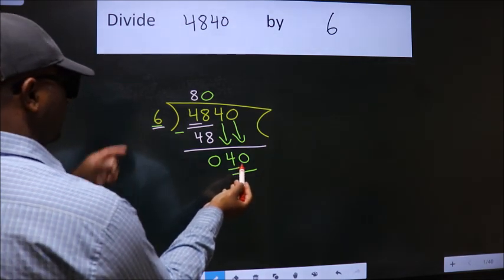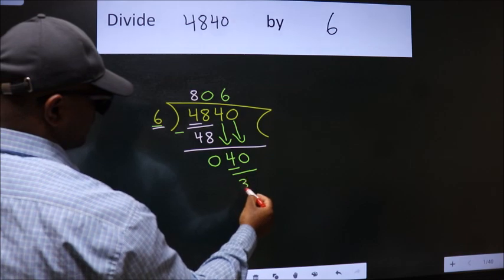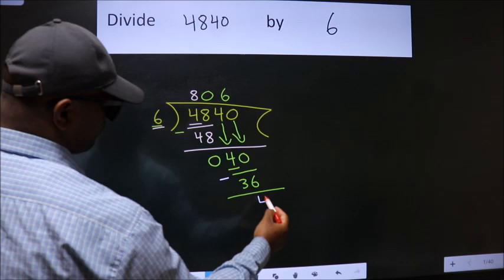A number close to 40 in 6 table is 6 times 6: 36. Now, we subtract. We get 4.